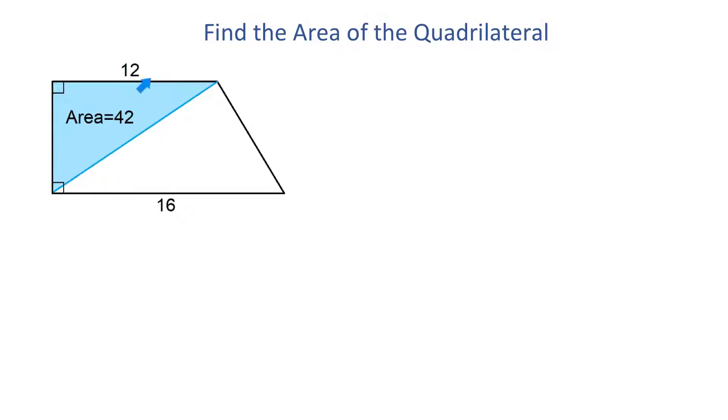In this figure, we have a quadrilateral with two right angles. One side measures 16 units and another one 12 units. We are also given the area of this right triangle and we have to find the area of the entire quadrilateral.